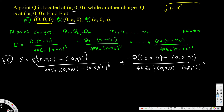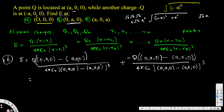Let's compute the denominators. For the first term, |(negative a, a, 0)| = √(a² + a²) = √(2a²) = a√2. Cubing gives (a√2)³ = 2√2·a³. For the second term, |(a, a, 0)| = √(a² + a²) = a√2, and cubing also gives 2√2·a³. Since both denominators are equal at 4πε₀ · 2√2 · a³, we can combine the fractions directly.